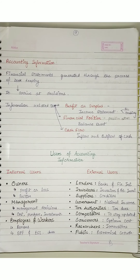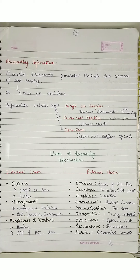Our topic is accounting information. When we are doing accounting, we get qualitative information from any economic entity that is necessary to take some important economic decisions. This has been studied in our flowcharts. So this is the information that we get after the bookkeeping process.